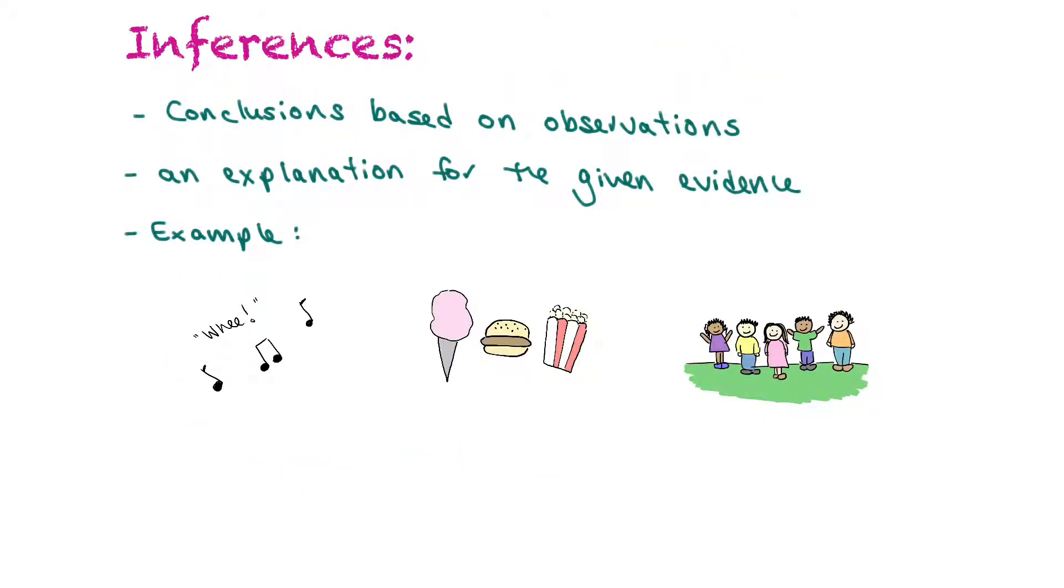Now inferences are conclusions based on the observations, and they're an explanation for the given evidence. The more observations you make for something, the more confident you can be in your inference. So here's an example of some observations and then your inference. I might hear yelling and music, and I might smell cotton candy and popcorn and barbecue, and I might see a whole bunch of people looking very happy, and I could infer that they might be at the fair.